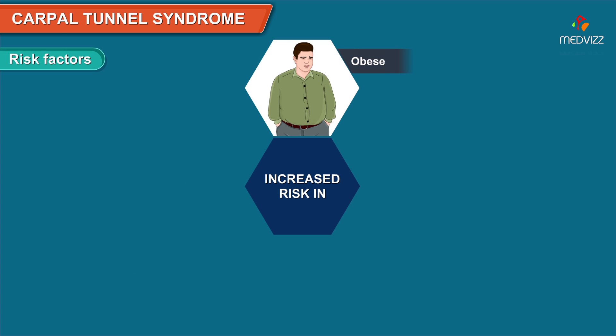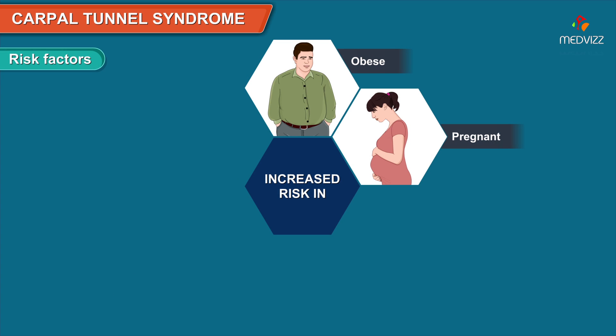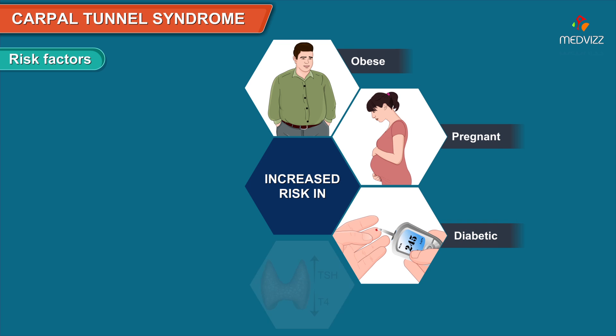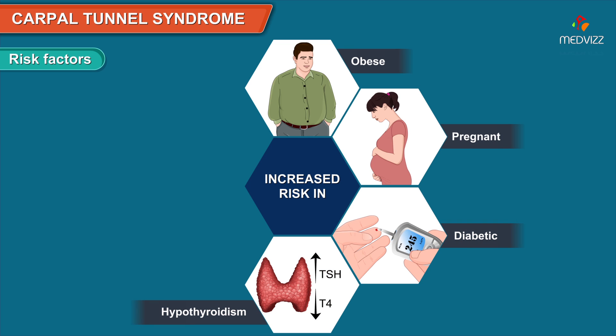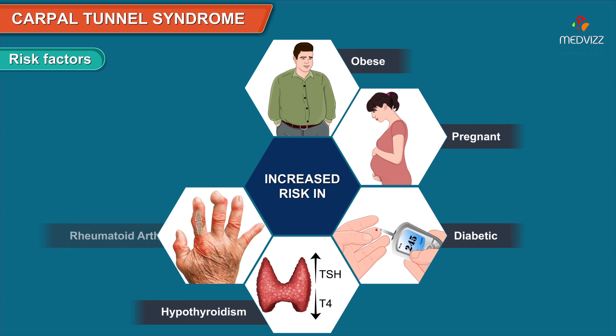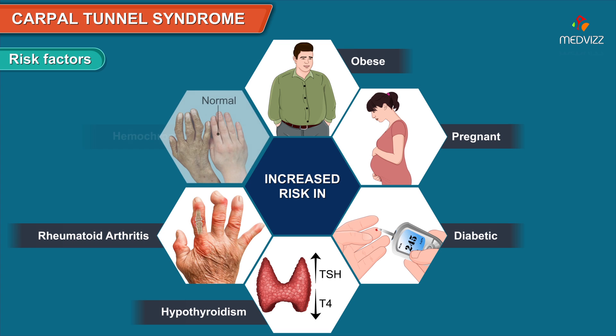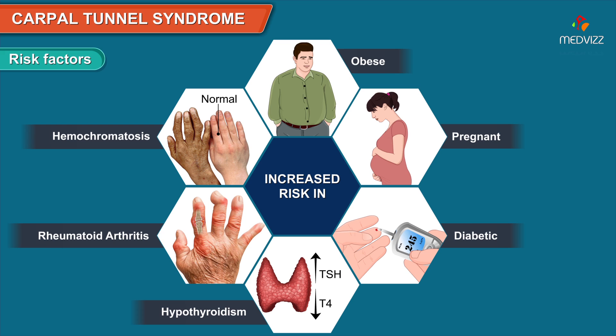Patients who are obese, pregnant, diabetic, hypothyroid, or those with chronic systemic diseases like rheumatoid arthritis, or infiltrative diseases like hemochromatosis, are all at risk of developing a compromised carpal tunnel causing neuropathy.